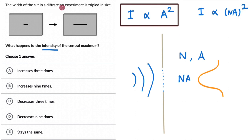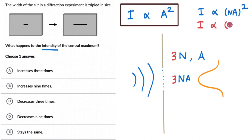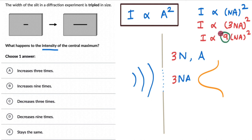If there are n sources each with amplitude a, the total amplitude at the central maximum is n·a, since all sources interfere constructively there. So intensity is proportional to (na)². Now the width is tripled, so there are 3n sources each with amplitude a. The total amplitude becomes 3na, and the intensity is proportional to (3na)² = 9(na)². So the intensity increases nine times, which corresponds to option B. You can try more exercises from this lesson, and if you're watching on YouTube, check out the exercise link in the description.